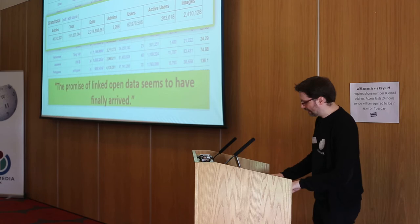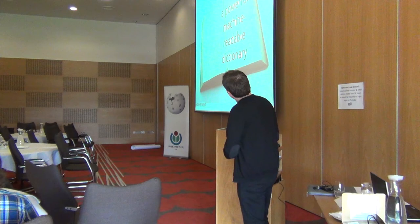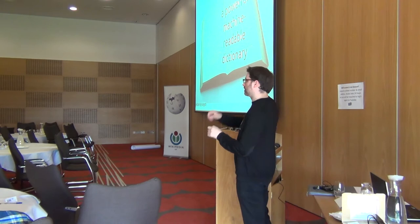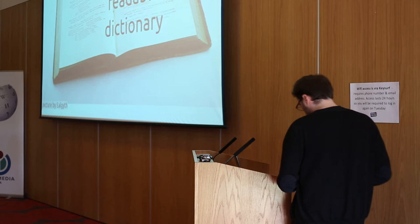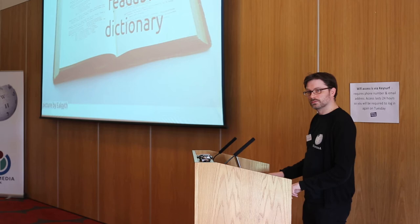The promise of linked open data seems to have finally arrived. Wikidata is also a powerful machine-readable dictionary — it could enable automatic translation, so that if you update information in English Wikipedia, it would then update Chinese Wikipedia. The data is completely devoid of having one language; whatever data you've added, anyone in any language can make use of it immediately. Completely different to Wikipedia where you make an English article and other people have to translate it.